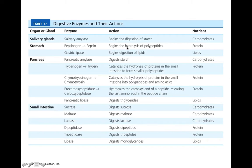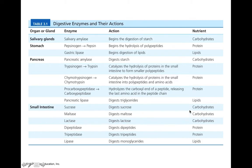Pepsin works at the stomach's very low pH, and stops functioning when chyme enters the small intestines. Trypsin then takes over at a pH of approximately 7. Chymotrypsin also works on proteins in the small intestines, and carboxypeptidase hydrolyzes the carboxyl end of the peptide chain, releasing one amino acid at a time. Pancreatic lipase digests triglycerides. In the small intestines we also have sucrase for sucrose, maltase for maltose, lactase for lactose, plus dipeptidase, tripeptidase, and intestinal lipase.